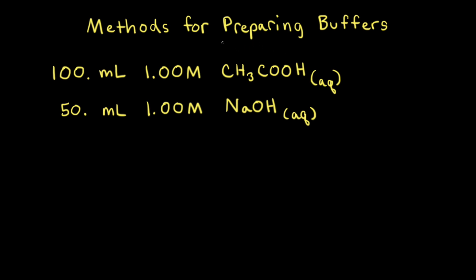Let's look at two different methods for preparing buffer solutions. In the first method, we're going to add an aqueous solution of a strong base, sodium hydroxide, to an aqueous solution of a weak acid, acetic acid. Our goal is to calculate the pH of the buffer solution that forms when we mix these two aqueous solutions together.